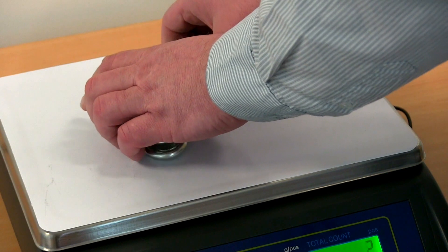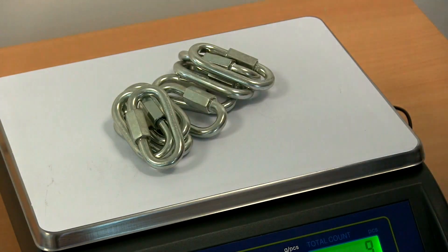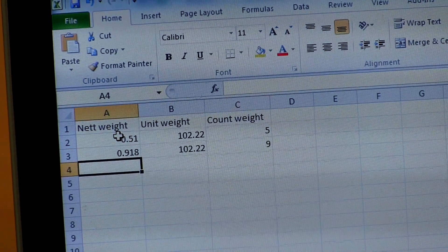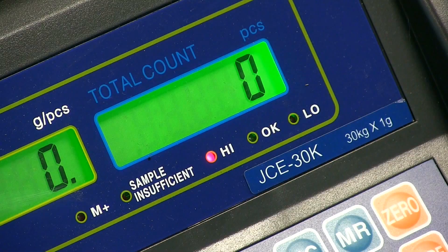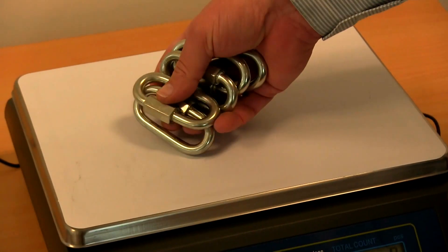You can then weigh and count items by simply adding them to the scale and the information will automatically transfer to the spreadsheet. The scale must be returned to zero before it can send the weight and populate a new row on the spreadsheet.